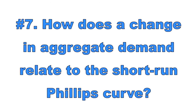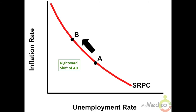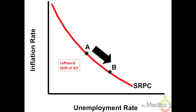Number seven: how does a change in aggregate demand relate to the short-run Phillips curve? The short-run Phillips curve shows the inverse relationship between inflation and unemployment, with unemployment on the x-axis and inflation on the y-axis. When aggregate demand shifts right, inflation rises and unemployment falls — represented by point-to-point movement leftward along the short-run Phillips curve. When aggregate demand shifts left, inflation falls and unemployment rises — represented by point-to-point movement rightward along the short-run Phillips curve.